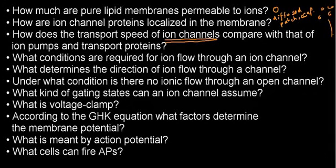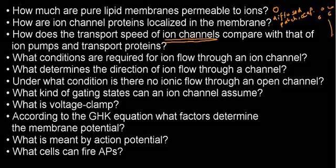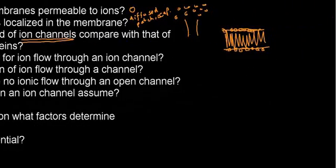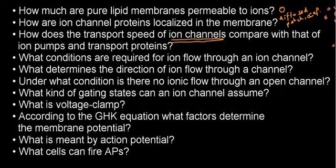What determines the direction of ion flow through a channel? It's determined by the chemical gradient, or we could say the electrochemical gradient would be more correct. Another answer would be the ion's equilibrium potential. All are good answers, but the best answer would probably be the electrochemical potential or the electrochemical equilibrium. We can expect the ion to go from high concentration to low concentration.